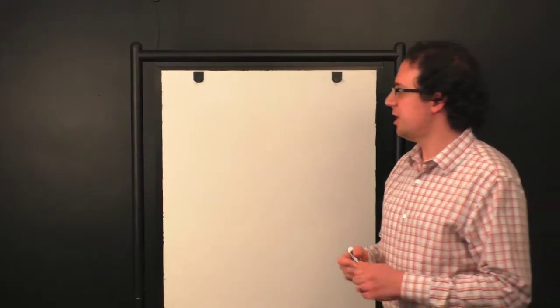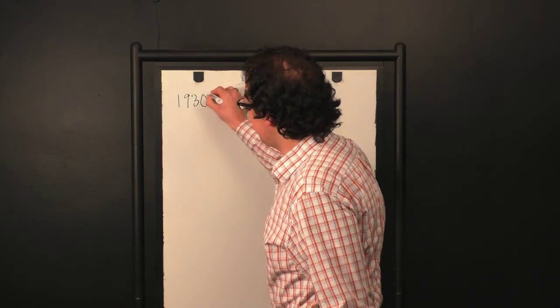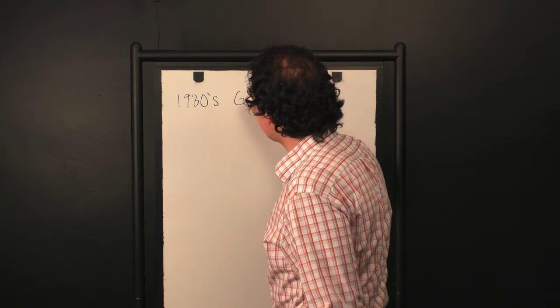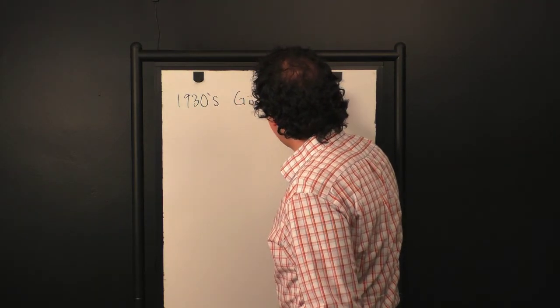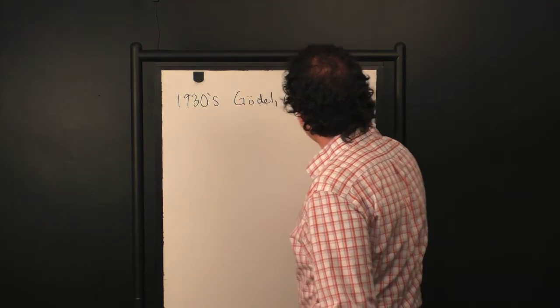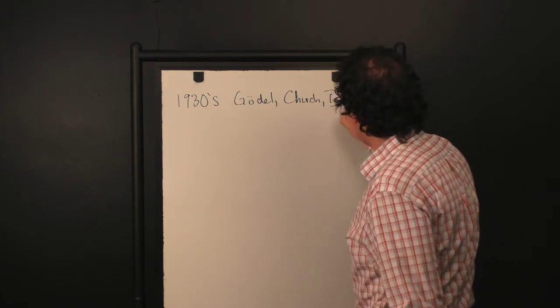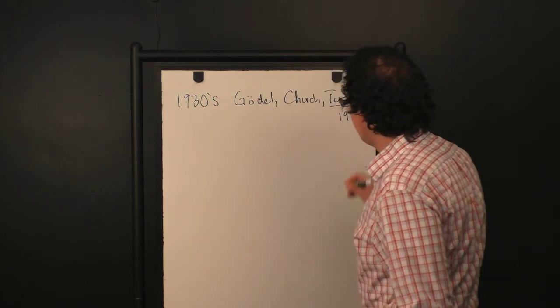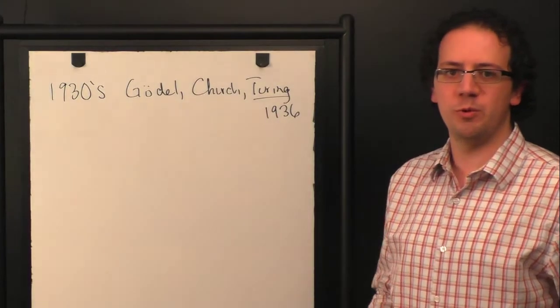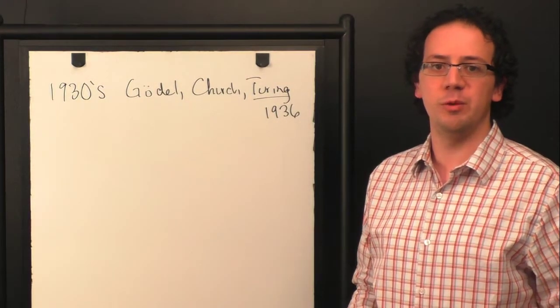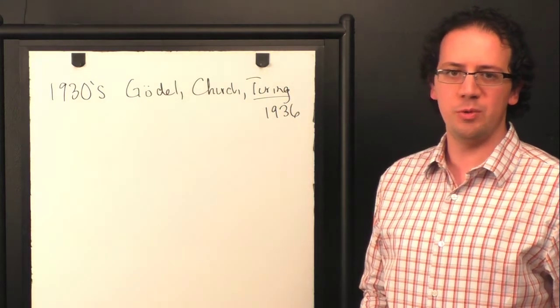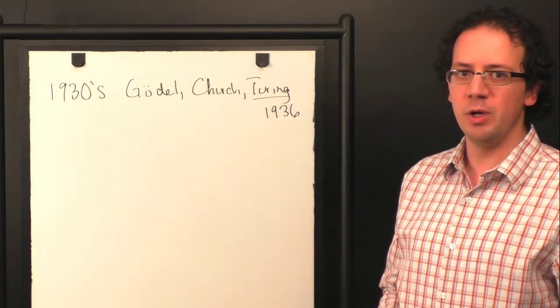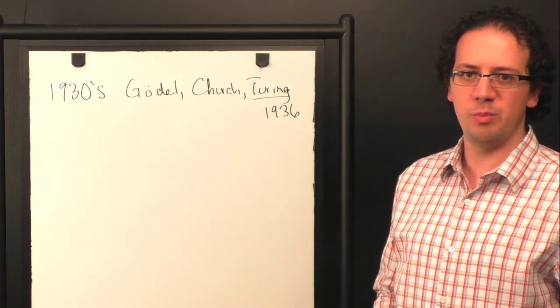In the 1930s, Gödel, Church and Turing and others gave many proposals for what it meant for something to be computable. And they started proving theorems about this. But it was really Turing in 1936 who not only gave a proposal for what it means to be computable, but gave an argument for why this was the right definition. So in this segment, we're going to review Turing's argument and Turing's model of computation.